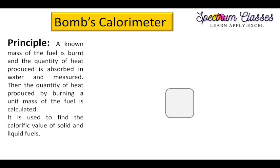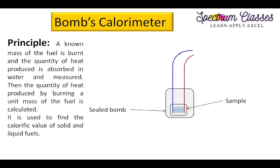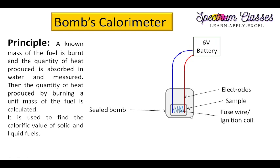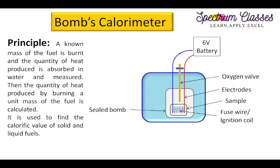First I will show you the construction of the bomb calorimeter. We have a steel bomb, and within this steel bomb we have a sample crucible containing a fuse wire and electrodes. The electrodes are connected to a battery. Since the sample cannot burn without oxygen, there is an oxygen inlet. Outside the steel bomb we have a water jacket containing water.